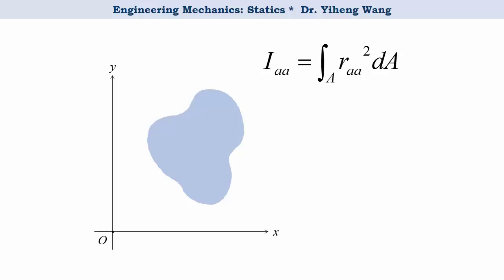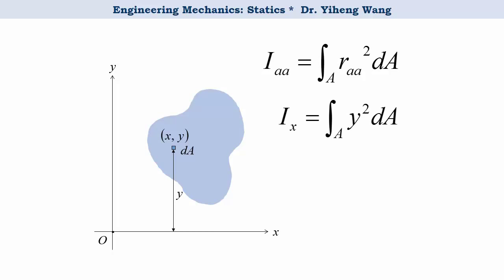Normally we place this area into an xy rectangular coordinate system, and we are interested to find its moment of inertia about the x-axis and the y-axis. We pick a differential element with area dA at location (x, y). Because its perpendicular distance to the x-axis is y, the moment of inertia about the x-axis is the integration of y squared times dA. Because its perpendicular distance to the y-axis is x, the moment of inertia about the y-axis equals the integration of x squared times dA.